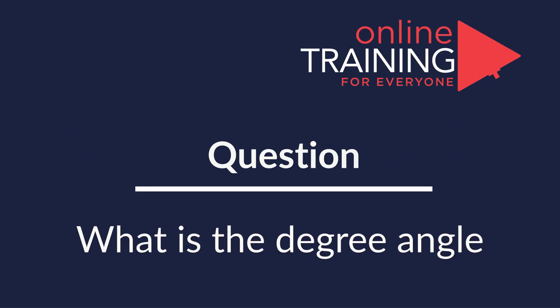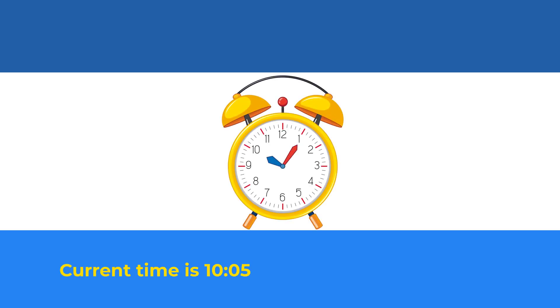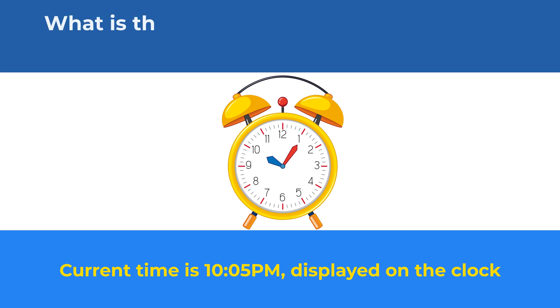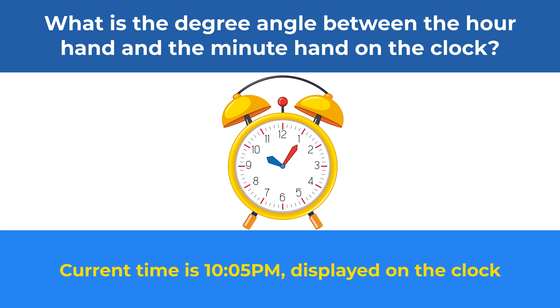Here is a frequently used question on the test, which may not be as simple as it looks. The current time on the clock is 10:05 pm. What is the degree angle between the hour hand and the minute hand on the clock?